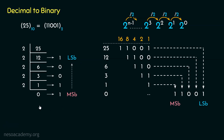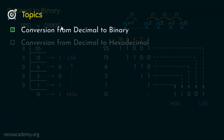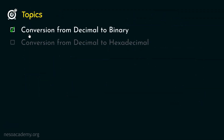Now I believe the idea is clear. This is how the conversion is done from decimal to binary. That was all about the conversion from decimal to binary.